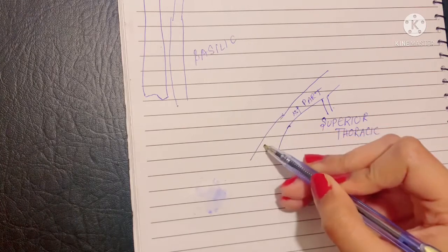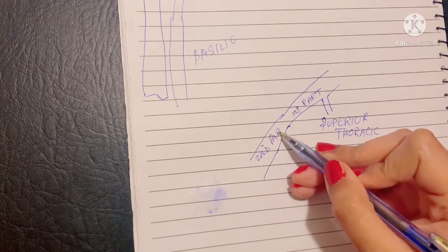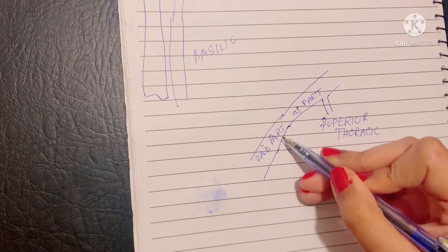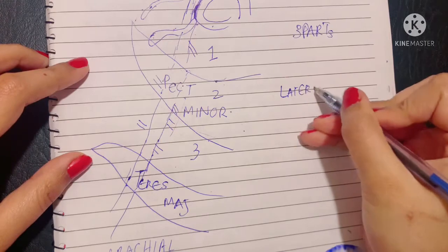Moving on, the second part, which is beneath the pectoralis minor, gives off two branches. The first branch is called the lateral thoracic artery.